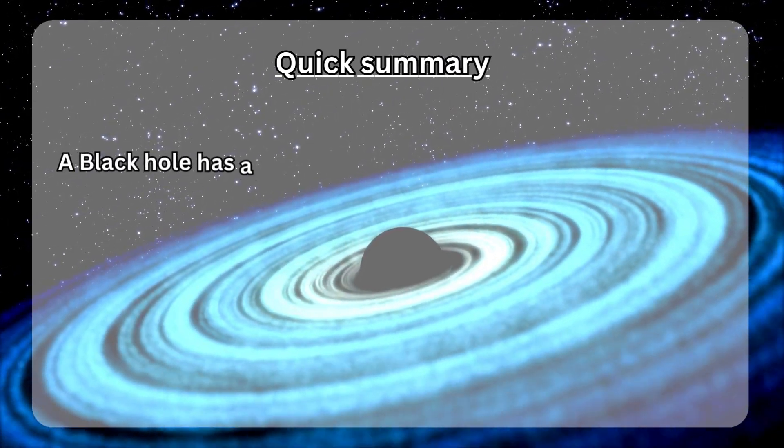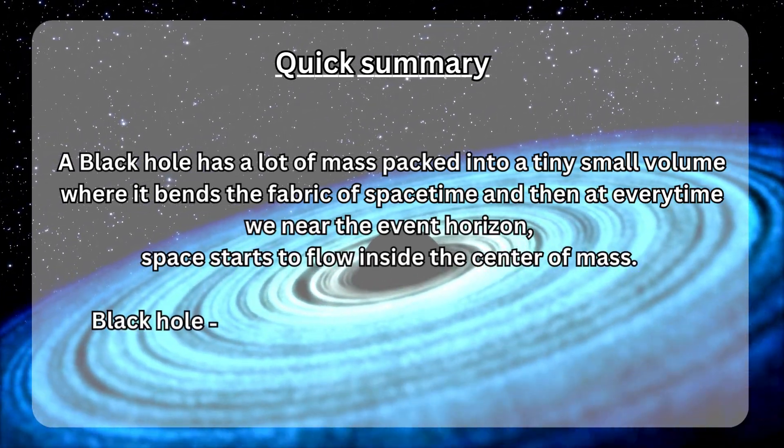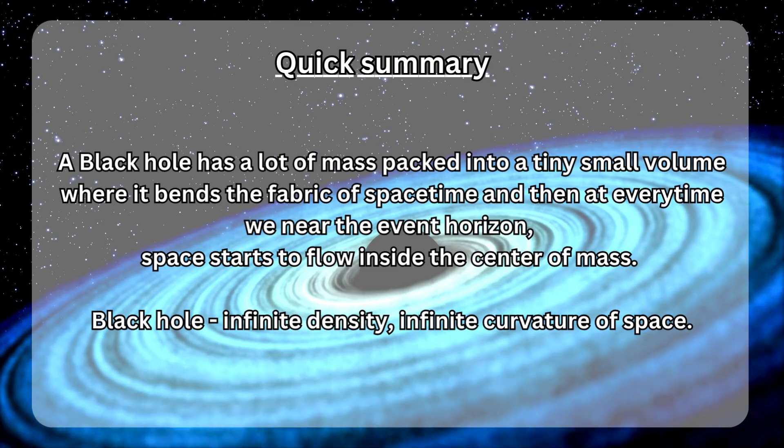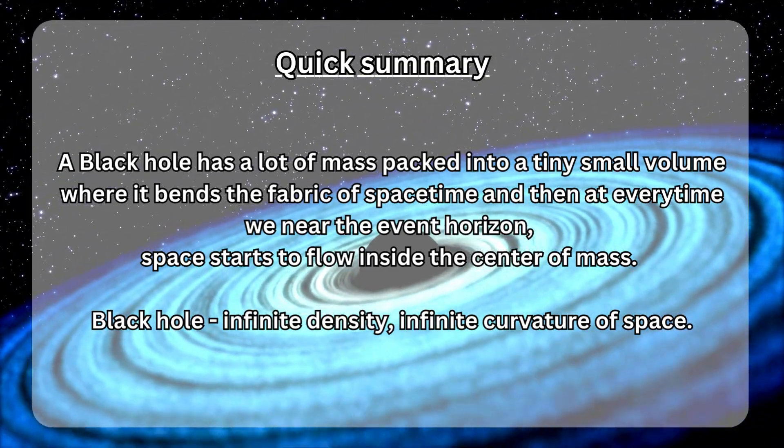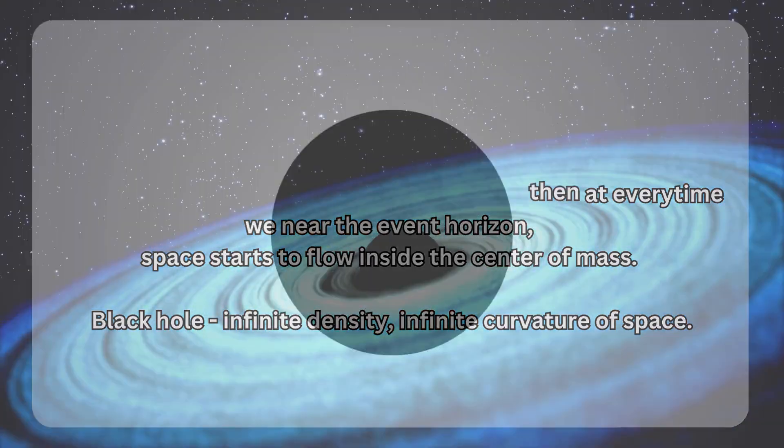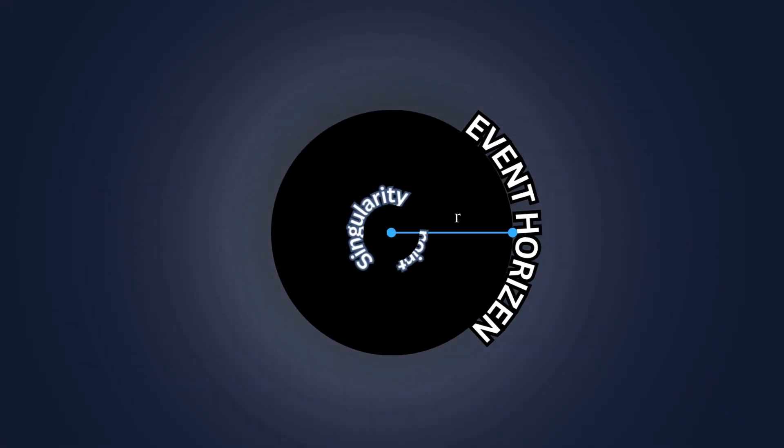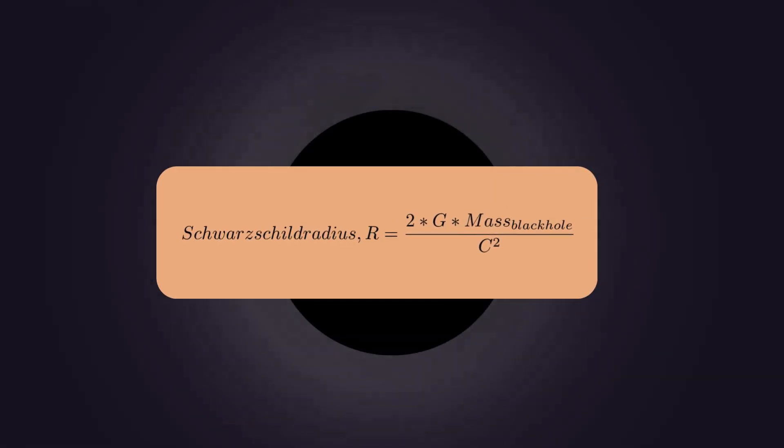Here's a quick tip summary. A black hole has a lot of mass packed into a tiny small volume, where it bends the fabric of space-time, and then every time we near the event horizon, space starts to flow inside the center of mass. Black hole: infinite density, infinite curvature of space. We can calculate the Schwarzschild radius of a black hole. The Schwarzschild radius is the radius of a black hole from the event horizon to the singularity point. Here is the formula for finding the radius: Radius equals two times the gravitational constant times the mass of the object, whole divided by square of speed of light.